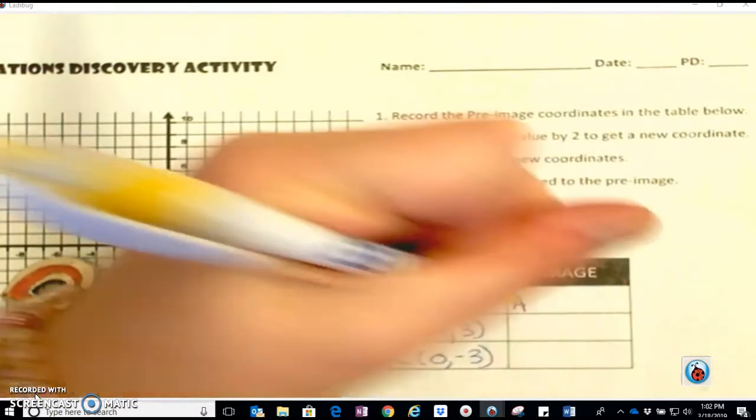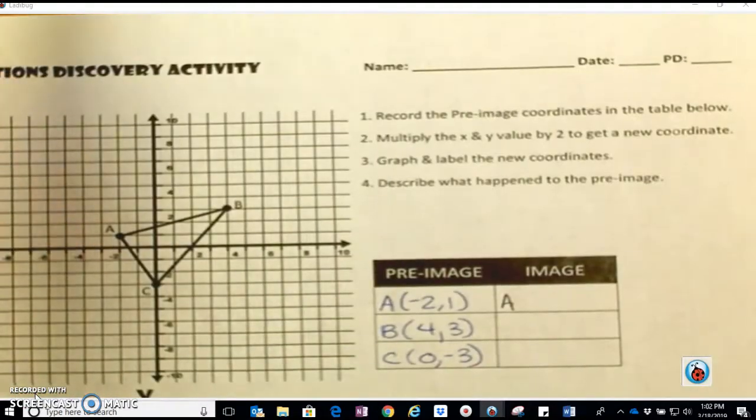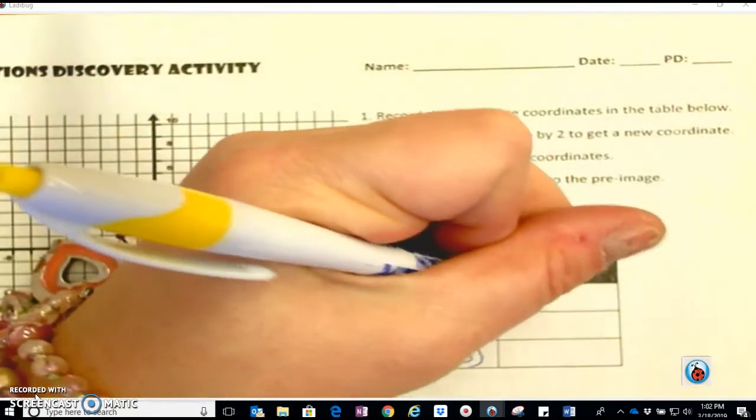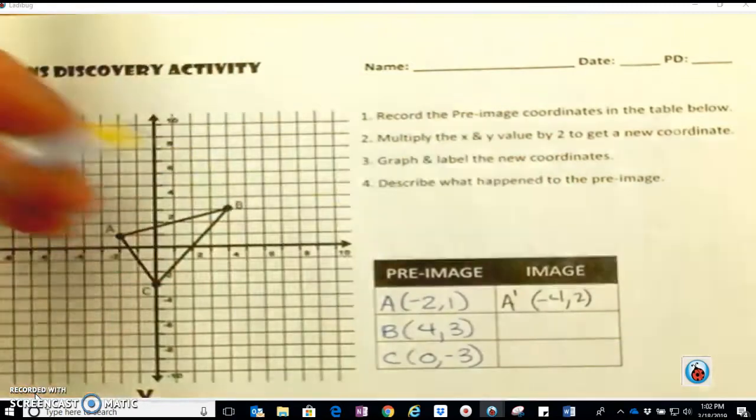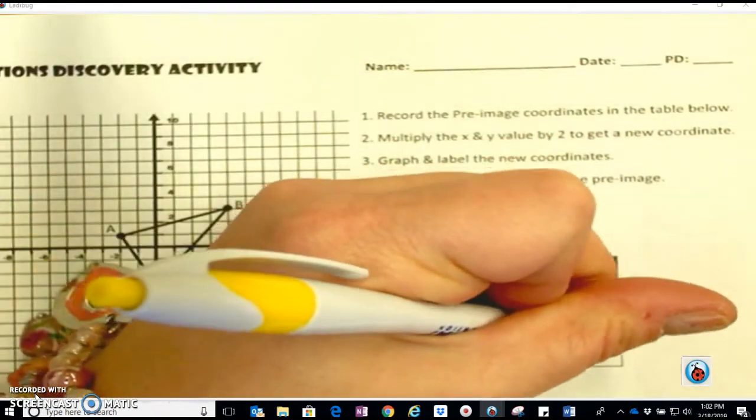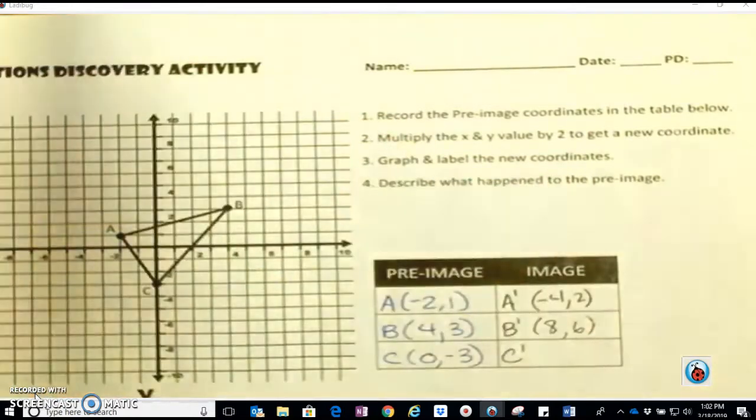So A, and remember when I do something to a point, I'm going to put the prime symbol. If I multiply both of them by 2, I'm going to get negative 4, 2. So B prime will become 8, 6, and C prime will become 0, negative 6.